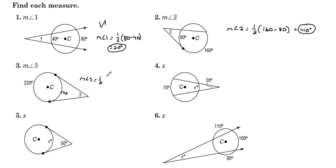one half of 220 minus 140. 220 minus 140 is 80. 80 divided by 2, 40 degrees.